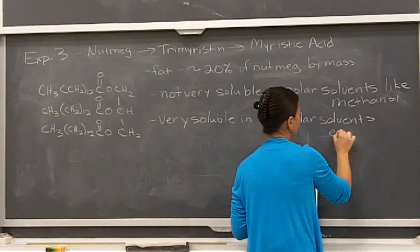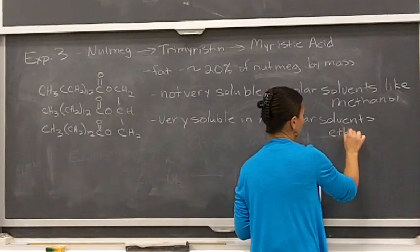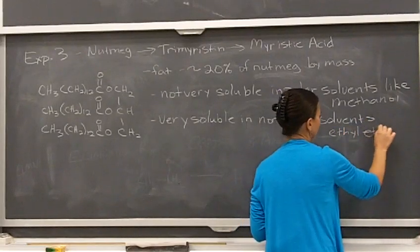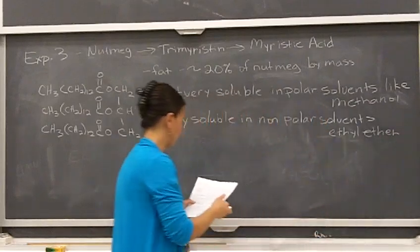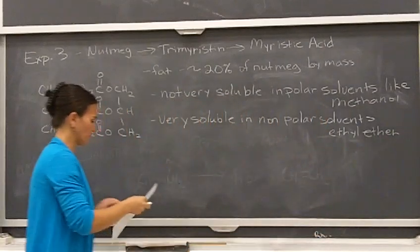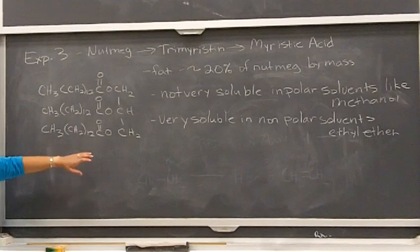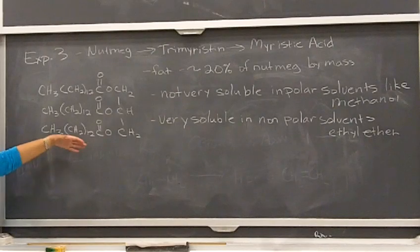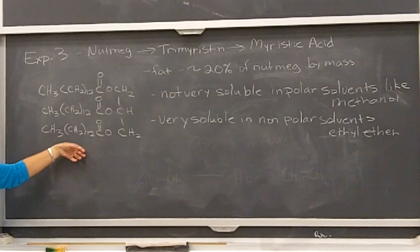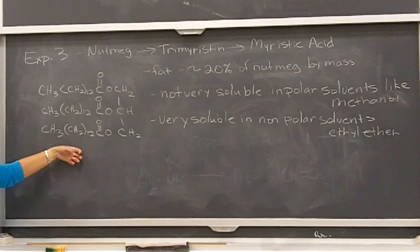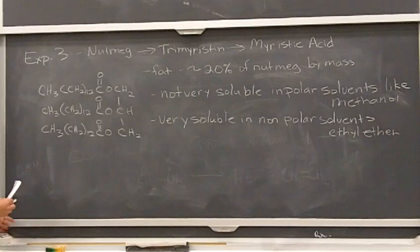It is very soluble in non-polar solvents, and an example of that would be ethyl ether — we'll get back to that in a little bit. It is a fat, so it has a lower melting point. It is actually a solid, so what you'll isolate this week is a solid, but it has a lower melting point being that it is a fat.